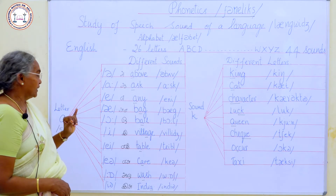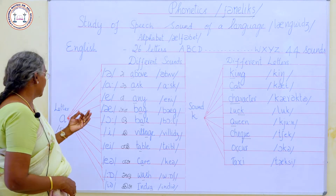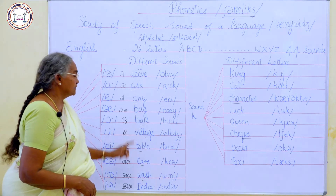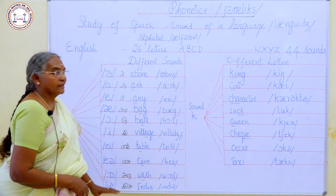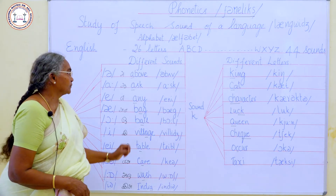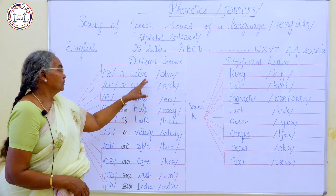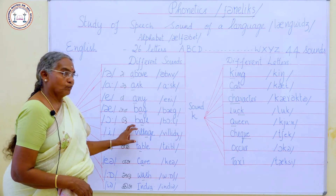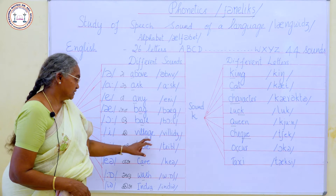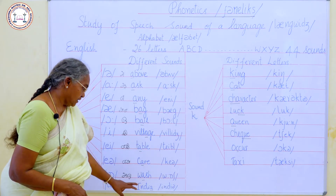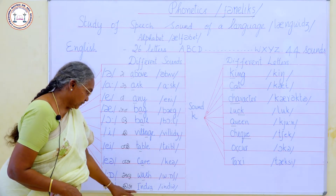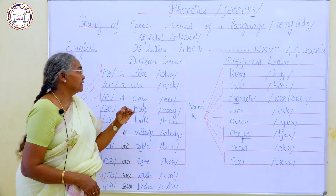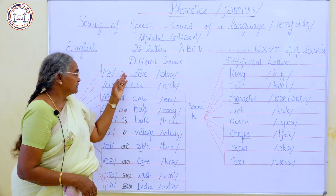One letter can have many sounds. For example, the letter A has many different sounds. Let me read all these words: above, ask, any, bag, ball, village, table, camp, wash, India. Are you able to notice the different sounds for the same letter A?